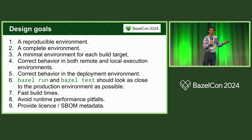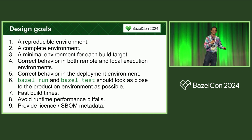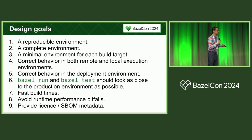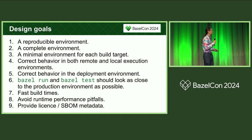It needs to work correctly with remote execution. We use remote execution and also sometimes local execution, and we need that to work the same way as in production, so you don't end up with things that only break in production. We want it to be pretty much the same for Bazel Test versus when we deploy our product as a tarball. We want fast build times, we want to avoid certain problems at runtime, and we want to provide license and SBOM metadata.